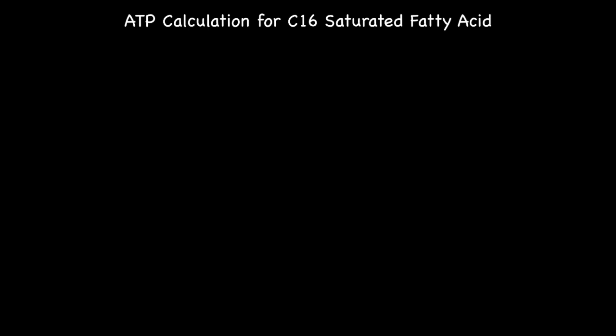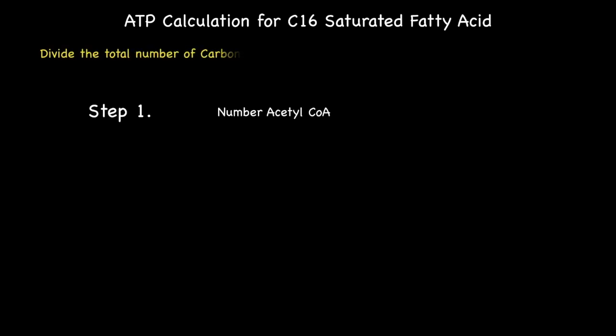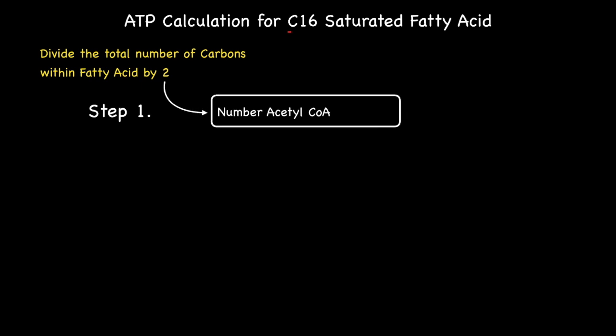We can use these numbers to calculate the total yield of ATP generated from an even-numbered saturated fatty acid using a three-step process. Step number one: begin by calculating the total number of acetyl-CoA produced from the beta-oxidation of the fatty acid by simply dividing the number of carbon atoms by two. So a C16 saturated fatty acid would generate eight acetyl-CoA. Now multiply this number by 10 ATP to give a total of 80 ATPs. Recall how each acetyl-CoA produced during beta-oxidation equals 10 ATPs when connected to the citric acid cycle.